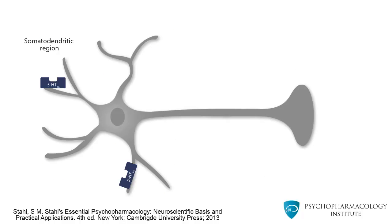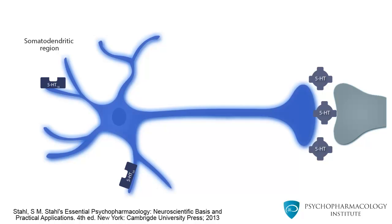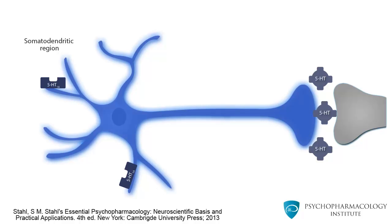Now we can see the effects of 5-HT1A downregulation on the serotonergic neuron. Here the focus is not on the somatodendritic region, but on the entire neuron. Since there are fewer 5-HT1A receptors expressed in the somatodendritic region, the neuron is now disinhibited. As a consequence, firing rate is increased. This in turn increases serotonin release to the synaptic space, which stimulates postsynaptic serotonin receptors. In summary, inhibition of serotonin reuptake increases serotonin concentration, which causes downregulation of 5-HT1A receptors. After the number of 5-HT1A receptors is reduced, the neuron is disinhibited to release more serotonin in the synaptic space.